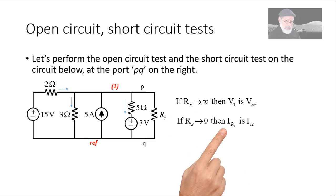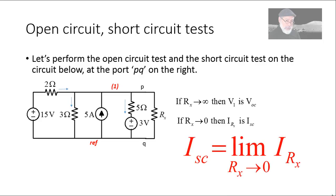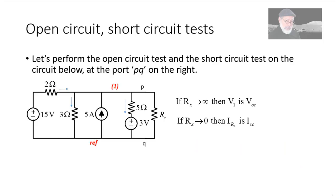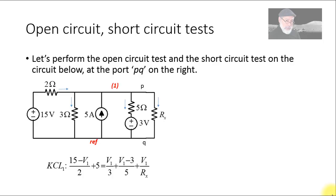And if I find the current through resistor Rx — called Irx or Ix — and let the resistance tend to zero, then that current becomes the short circuit current. So the plan is: find the voltage across Rx, find the current through Rx, and perform two limit operations.